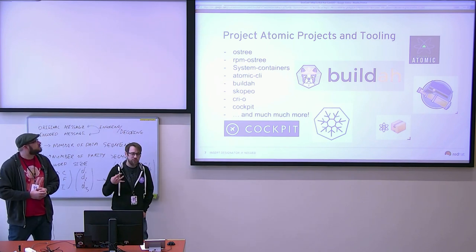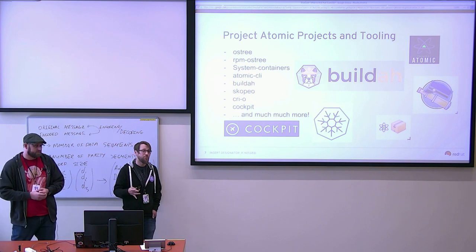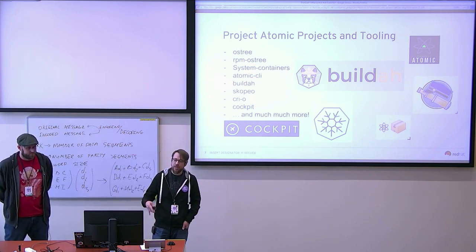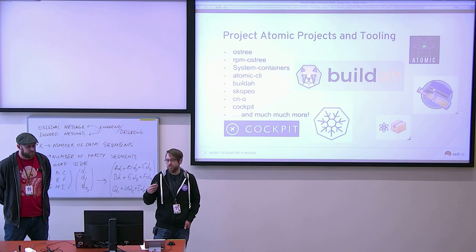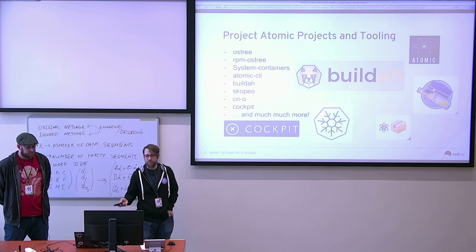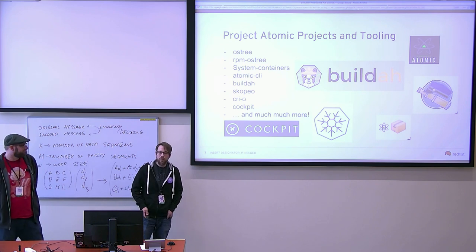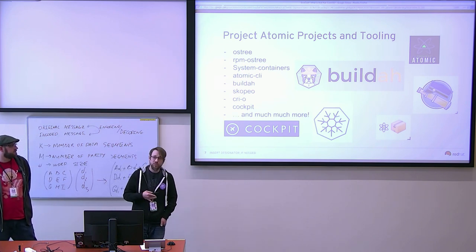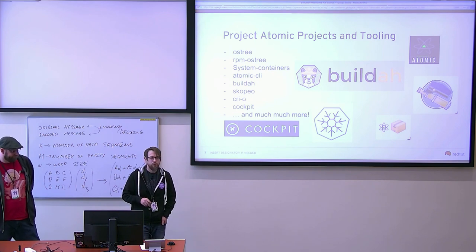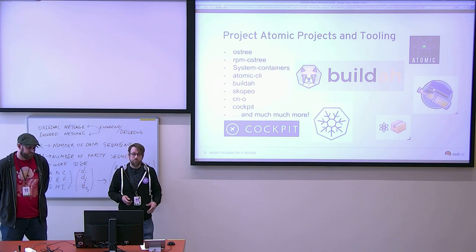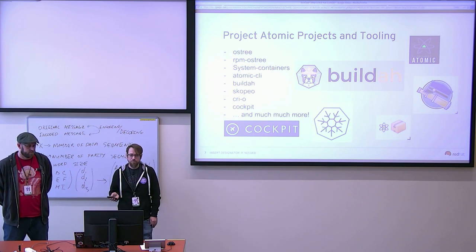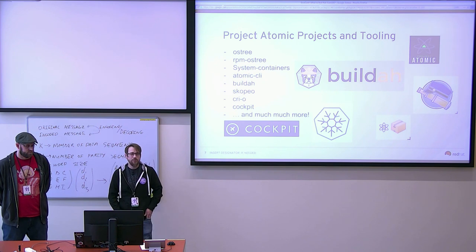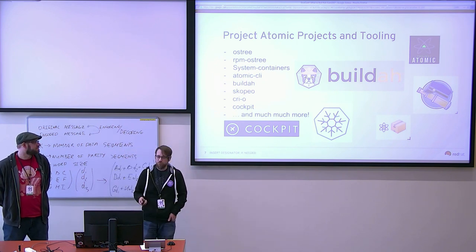Other things from Project Atomic include the Atomic CLI, which sat in front of a lot of other tools as a management interface so administrators could log in and pull down pod installations, pull images, install system containers, or do system updates. Buildah is for building OCI containers. Skopeo is for moving them around. CRI-O is an implementation of the CRI, the container runtime interface for Kubernetes. And Cockpit is a really awesome UI for management of systems.